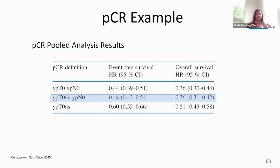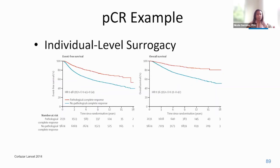Ultimately, 12 trials were included in the analysis, and three different definitions of pathological complete response were evaluated. It was determined that absence of residual invasive tumor in both the breast and the axillary lymph nodes was better associated with improved event-free survival and overall survival than the absence of residual invasive disease in the breast alone. The meta-analysis established that at the individual patient level, achievement of pathological complete response was associated with a substantial reduction in risk of death compared to those patients with residual tumor, firmly establishing pCR as an individual patient prognostic biomarker.